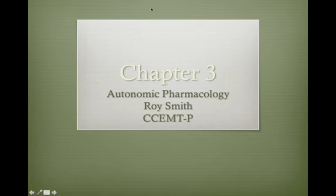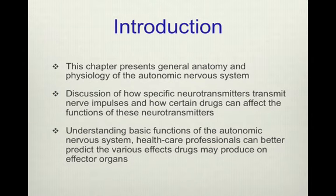This is going to be Chapter 3, Autonomic Pharmacology, an introduction. This chapter presents general anatomy and physiology of the autonomic nervous system and discusses how specific neurotransmitters transmit nerve impulses and how certain drugs can affect the functions of these neurotransmitters.